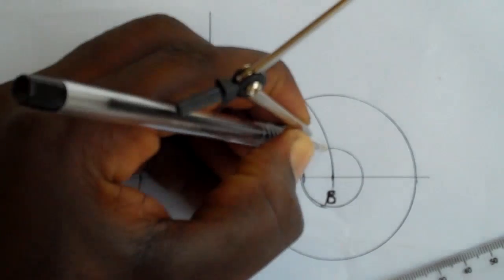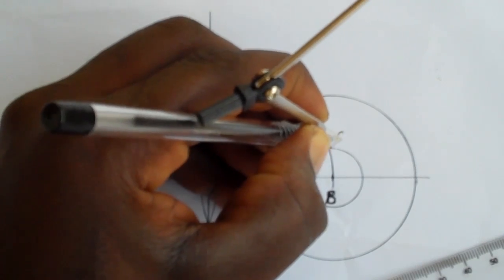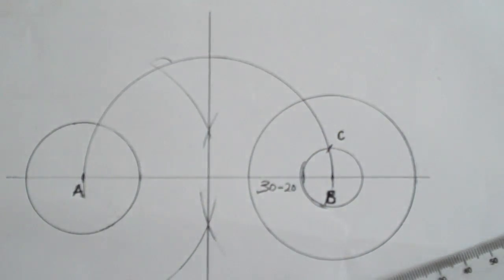The small new circle of radius 10 millimeters that you have just drawn will intersect the bisector that you drew in the first place at a point I'm going to call C.